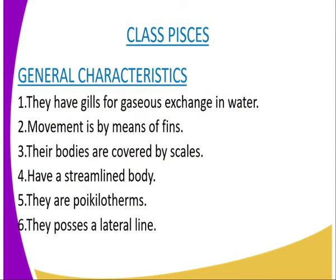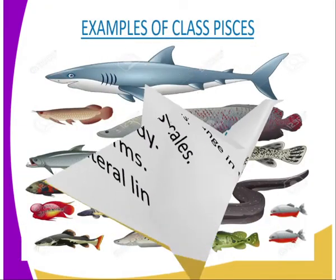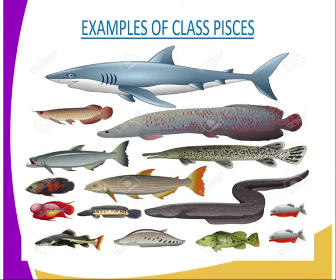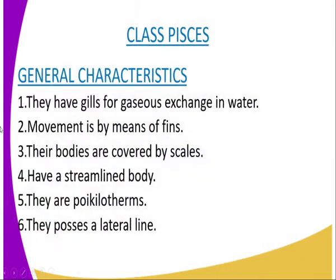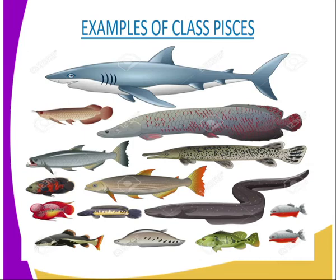We are now going to look at Class Pisces, which falls under the Phylum Chordata. These are the fishes. We can have a diagrammatic representation of different fishes. A number of fishes have a skeleton made up of cartilage — for example, the shark. Others such as tilapia have a skeleton made up of bone. Other examples of fish include the Nile perch, lungfish, and ray fish. Looking at the general characteristics of this class: one, they use gills for gaseous exchange in water. Two, movement is by means of fins, as you can see from our diagram.